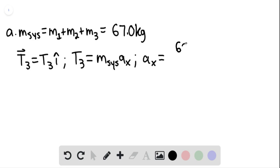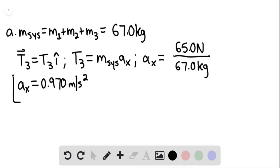Which we know to be 65.0 newtons, divided by 67.0 kilograms. And we find that the acceleration in the X direction is going to be equaling 0.970 meters per second squared. And this would be for the system and each of the blocks individually.